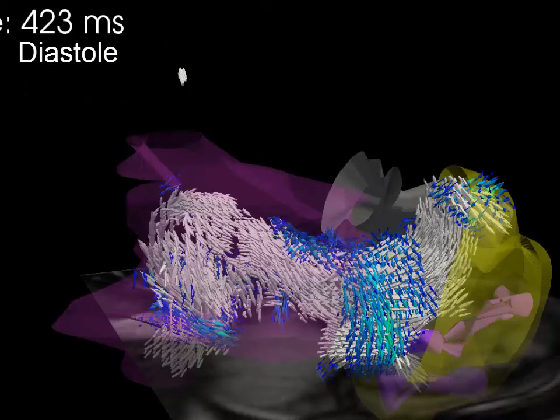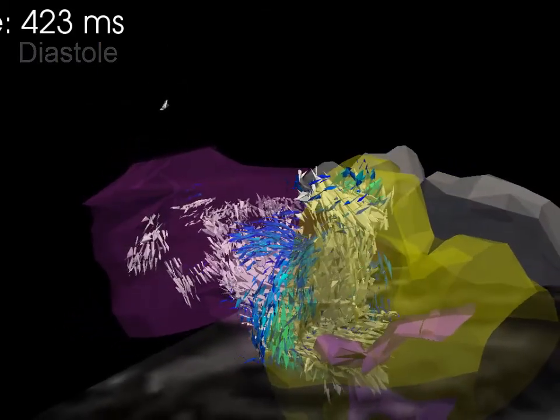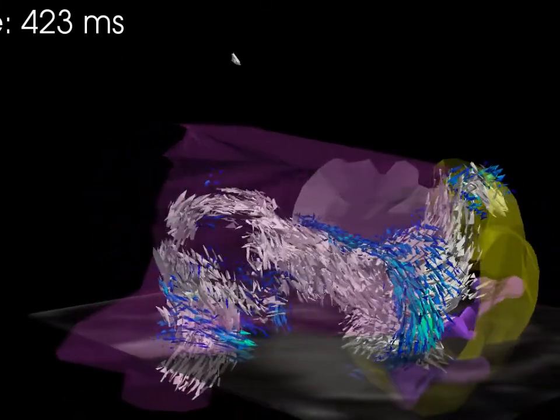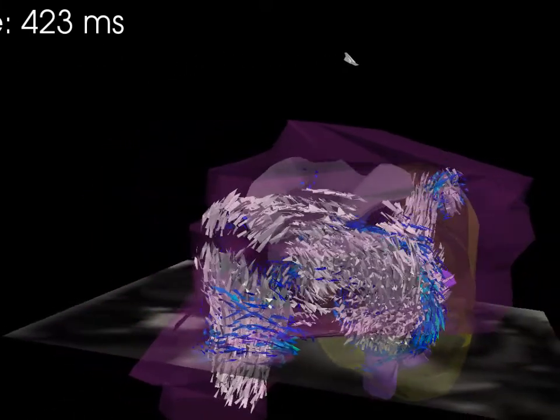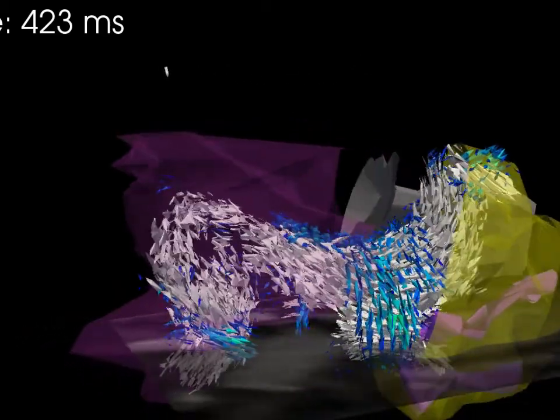In early diastole, we have flow coming up the IVC, corkscrewing through the right atrium into the right ventricle. Now we delete the atrial flow for clarity.